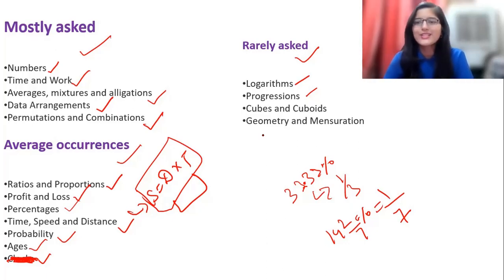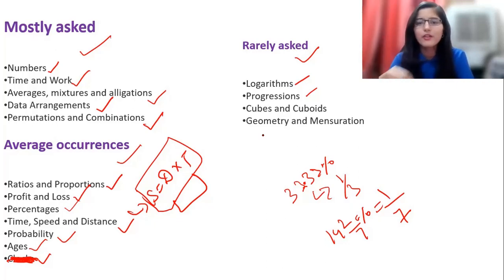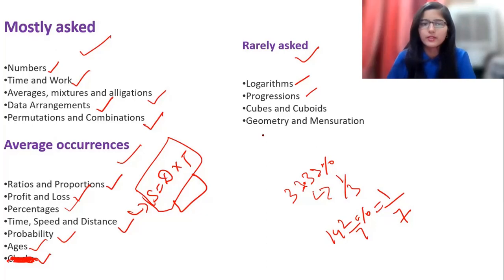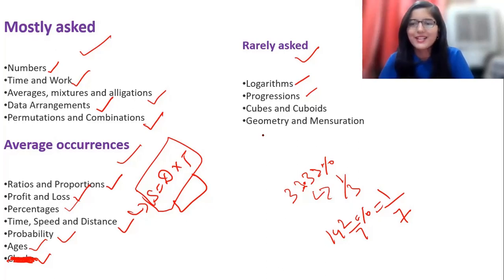I hope this video has helped you understand which topics should be focused on first. Strategy matters a lot - many students put in effort but don't get results because they're not following a proper strategy. Randomly picking topics - like spending all your time on Logarithm when it's rarely asked - gives no profit. Follow a strategy and cover each topic one by one. Thank you for watching - make sure to like, subscribe, and share this video with friends who are thinking of giving the TCS NQT. Keep learning!